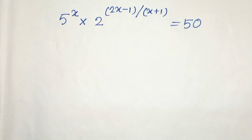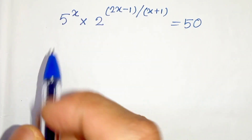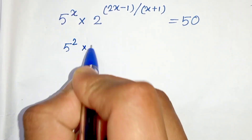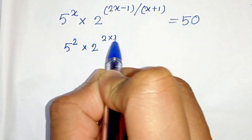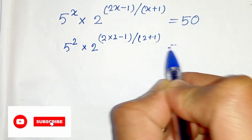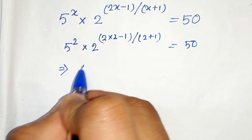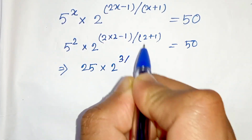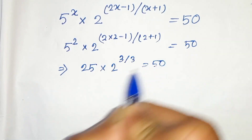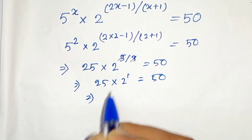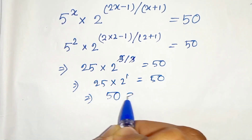And there is another solution which is x equals 2. Let's verify by putting x equals 2 in the given equation. So 5 to the power 2 times 2 to the power (2 times 2 minus 1) divided by (2 plus 1) equals 50. So 25 times 2 to the power (3/3) — that is 2 to the power 1 — equals 50. So 25 times 2 equals 50, which confirms x equals 2 is also a solution.